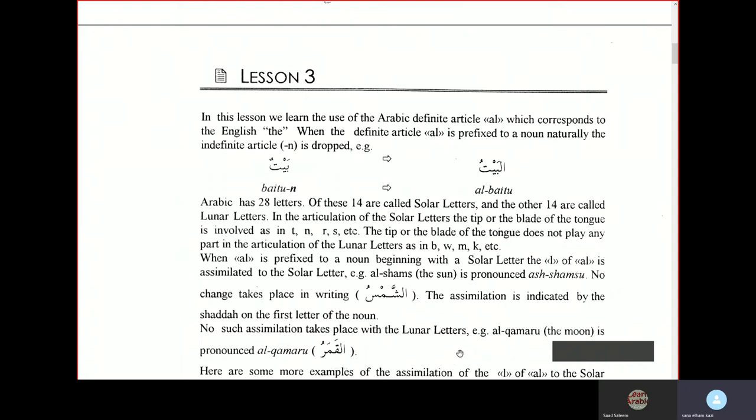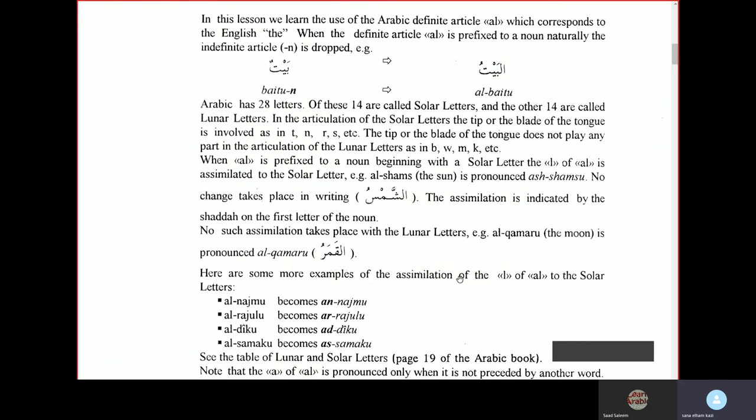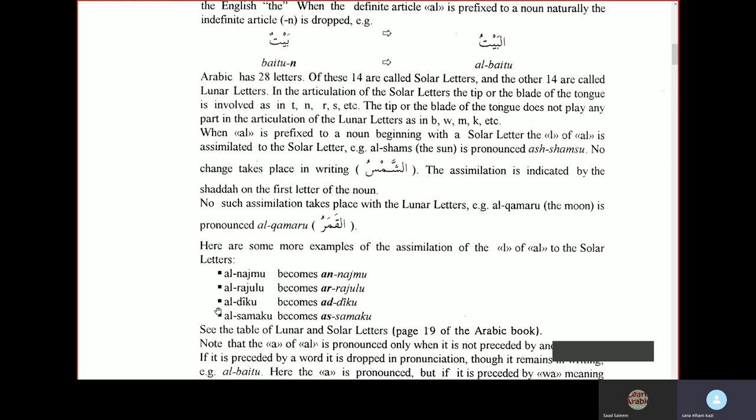Here are some more examples of the assimilation of the lam of al to the solar letters. For example, al-najmu, the star, becomes un-najmu. It's not pronounced as al-najmu, but as un-najmu. Similarly, al-rajulu, even though it's written as al-rajulu, you will put a shadda on ra and pronounce it as ar-rajulu, the man. Al-deeku will become ad-deeku, the rooster. Al-samaku, the fish, becomes as-samaku.